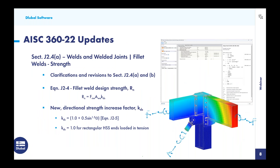Turning now to AISC 360 and the new 2022 updates relevant for RFEM specifically for connection design, the list is short: just Section J2.4A for welds and welded joints, in particular fillet weld strength calculations. There were clarifications and revisions made to Section J2.4A and B. The main reason is that equation J2-4 for fillet weld design now includes the directional strength increase factor K sub DS, calculated according to equation J2-5, unless we have a rectangular HSS — in that case this value should be set to 1.0. This is reflected in the design check details in RFEM for all fillet welds.